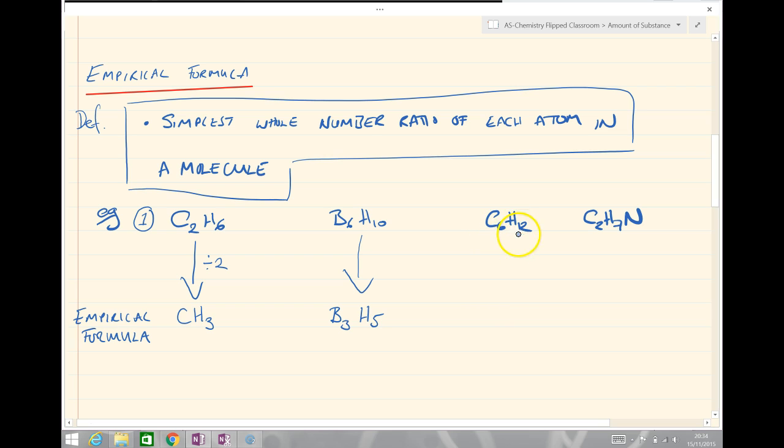C6H12, which is hexane. Our simplest whole number ratio here is going to be, divide by two gives C3H6, but actually if I'm going to divide through by six, I'm going to get CH2.